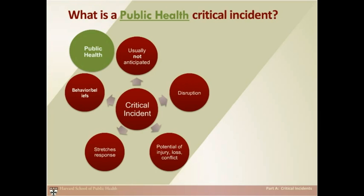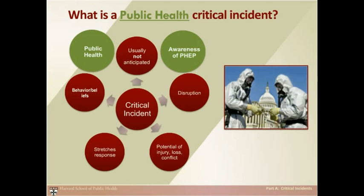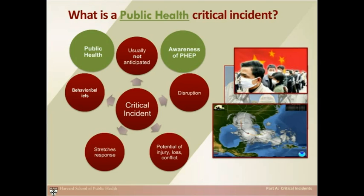The event could also have tested one or more of the Centers for Disease Control and Prevention's 15 public health emergency preparedness capabilities, sometimes referred to as PEP capabilities, or captured the PEP community's attention. Public health critical incidents include events such as the anthrax attacks in 2001, the H1N1 outbreak in 2009, the West Nile virus outbreak in Texas in 2012, and many others. Because these public health events are rare, singular events, we must examine them in detail to improve future responses.